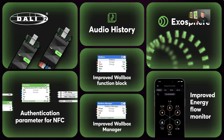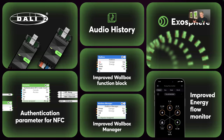The Wallbox Manager ties in naturally with the Wallbox. If, say, 7.4 kW is available for a bank of Wallboxes and one car takes all 7.4 kW, a second car that then plugs in won't get any power because it's already been allocated. The Wallbox Manager now ensures the allowed power is shared and redistributed across all Wallboxes currently in use.